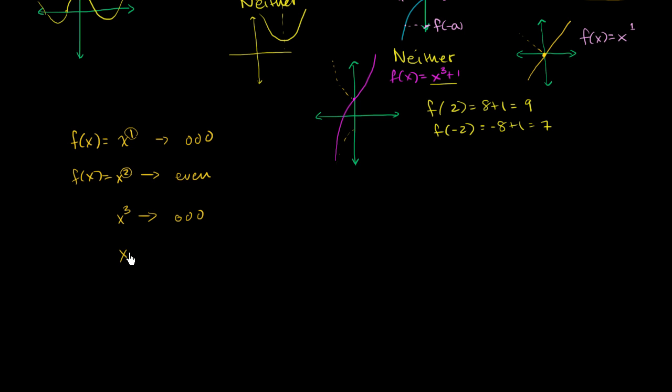Let me write it this way. In general, if you have f of x equals x to the n, then this is an odd function if n is an odd number, and this is an even function if n is even.